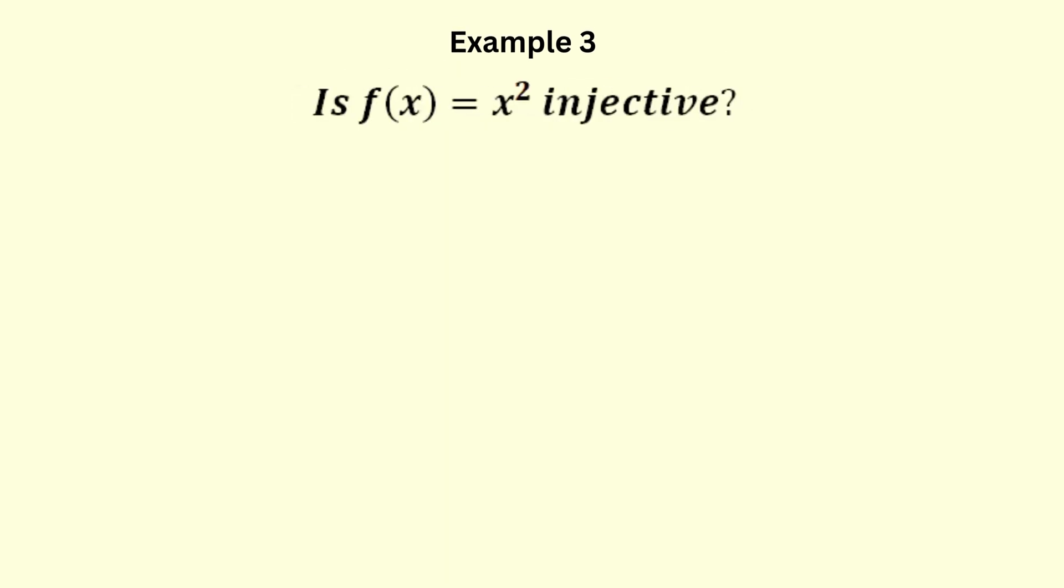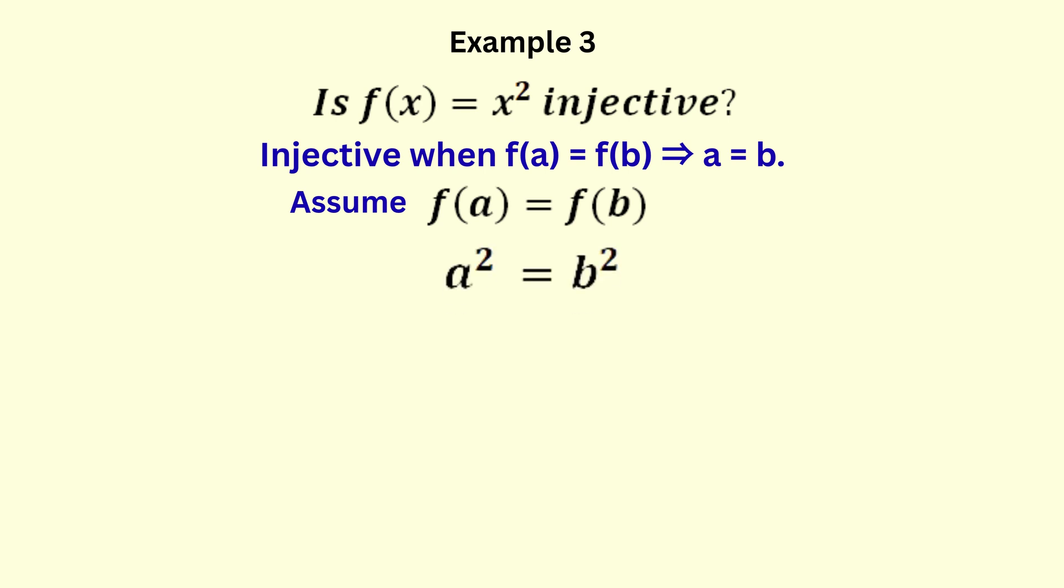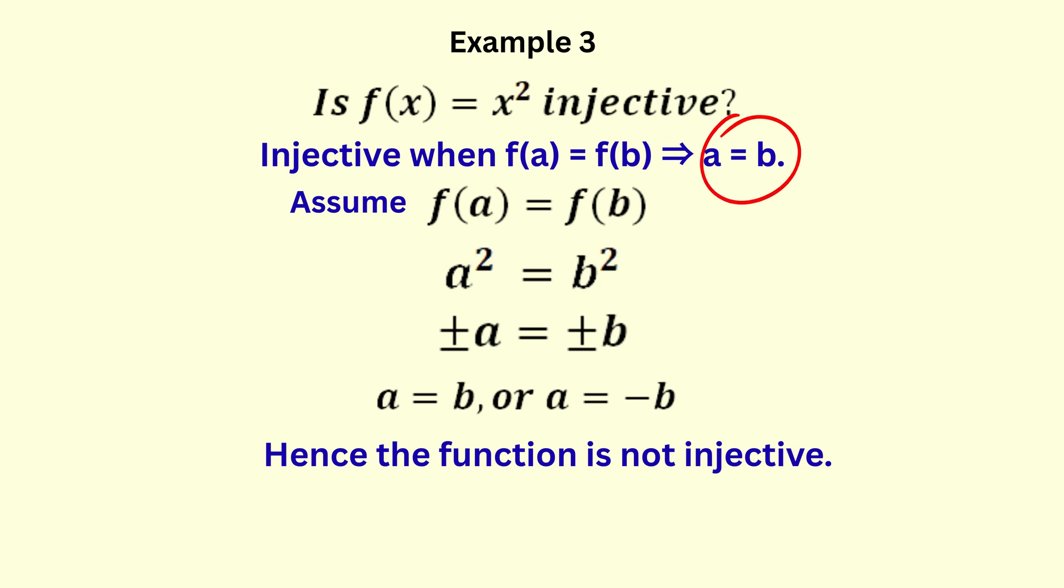Now let's look at a function that is not injective. For example, f of x equals x squared. To check if the function is injective, we'll begin with the algebraic method. Recall that the function is injective when f of a equals f of b leads to a equals b. Assume f of a equals f of b. So, we get a squared equals b squared. Take square root of both sides and we get plus or minus a equals plus or minus b. This means that a equals b, or a equals minus b. Hence the function is not injective. For the function to be injective, a must be equal to only b.